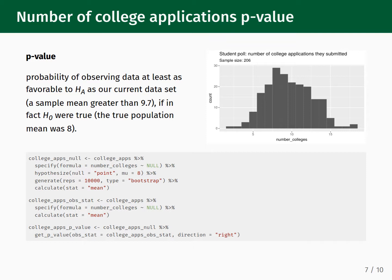Since this dataset consists of a single numerical column and we are comparing the average of this column against the null value of 8, our infer code will look a little different from what we used for the gender discrimination experiment dataset. We begin by piping our college_apps dataset into the specify function. We specify our formula as number_colleges tilde null — this is the format you should use for your formula if your dataset only has a single variable. We then pipe this into hypothesize, setting the null keyword equal to point, which indicates that our null hypothesis corresponds to a single value instead of a distribution. When using null equals point, we also need to set a second keyword, mu — mu is the null value, which for our example is 8.